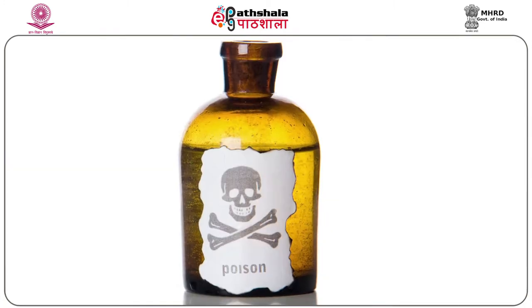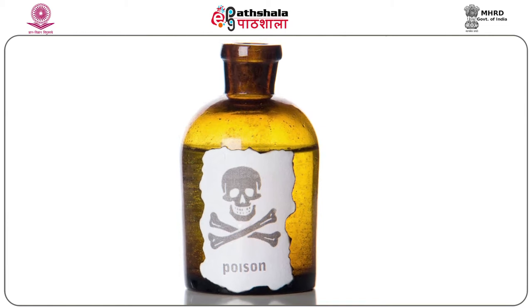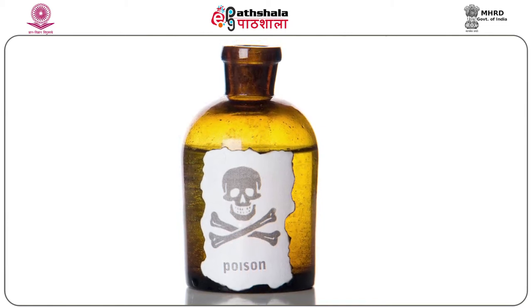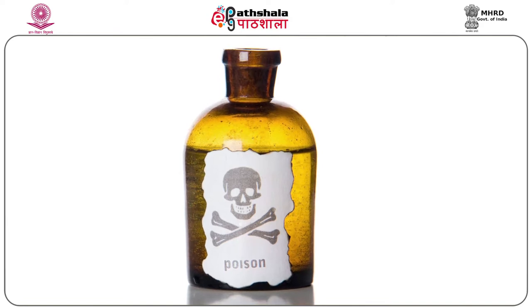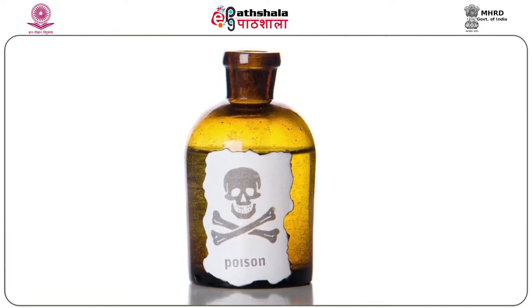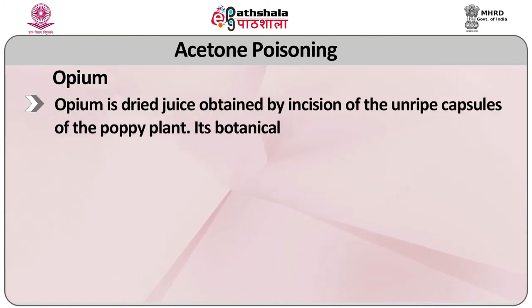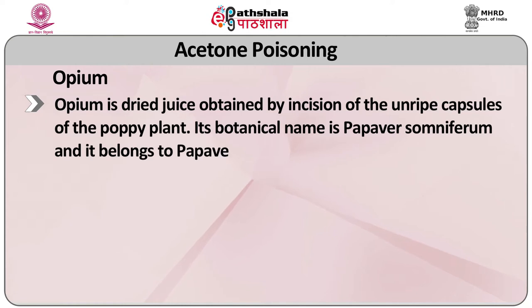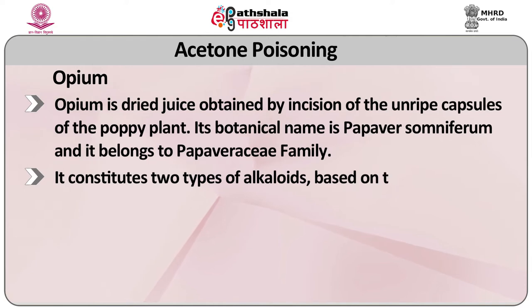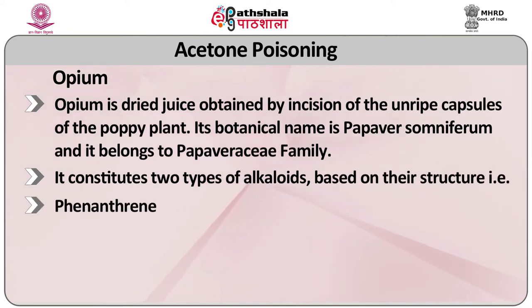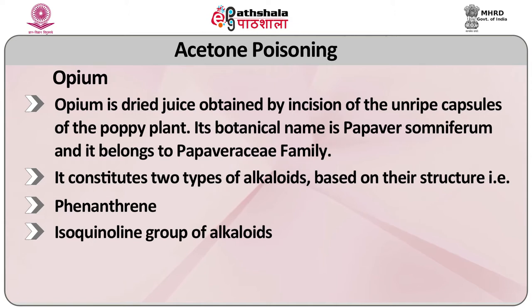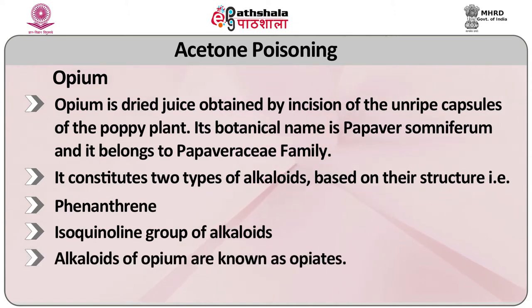To better understand these extraction procedures, one should also know about the type of poisons and their basic nature. From this method we can extract alkaloids of opium. Opium is a dried juice obtained by incision of the unripe capsule of a poppy plant. Its botanical name is Papaver somniferum and it belongs to the Papaveraceae family. It constitutes two types of alkaloids based on their structure: the phenanthrine and isoquinoline groups. Alkaloids of opium are known as opiates, also known as narcotics.